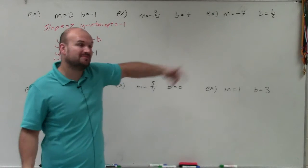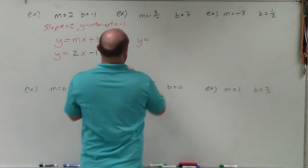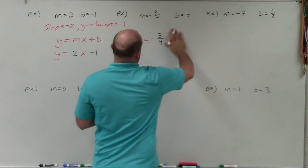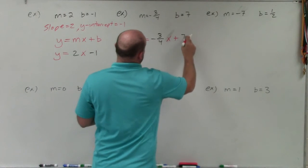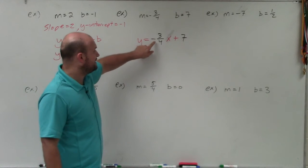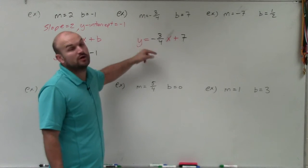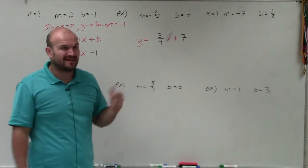In this case here, we have a fraction, but again, all we're simply doing is plugging it in. So this looks like y equals negative 3 fourths x plus 7. Now, just remember, when you have a negative, when we write the negative in front, that could be a negative 3 over 4, or it could be a 3 over negative 4. It doesn't matter where the negative is, so we always just like to write it out in front.